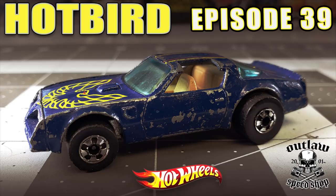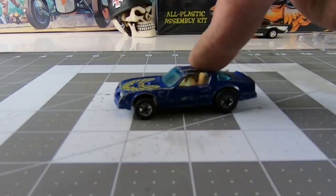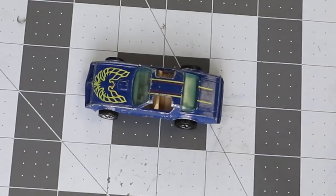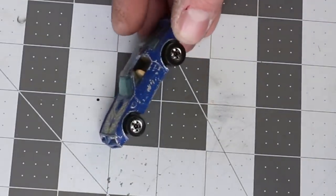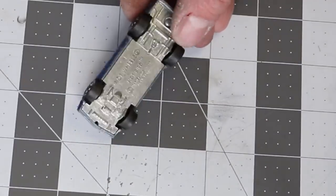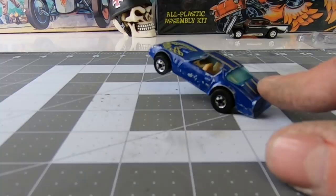Hey, this is Keith from Outlaw Speed Shop and I'm doing a second video this week. This is a Hot Bird from my childhood, part of my collection that I never got rid of. It was one of my favorite cars growing up. I very rarely used it because it didn't roll as well as I thought it would when I used to race them, but I'm looking forward to tackling this one.